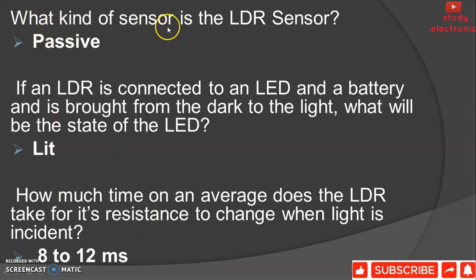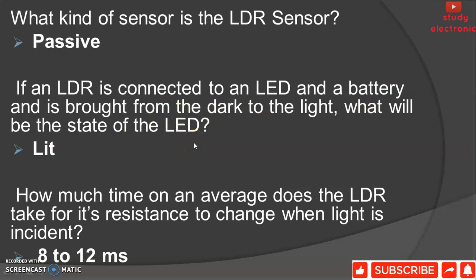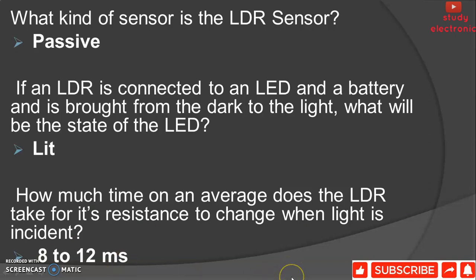What kind of sensor is the LDR sensor? It is a passive sensor. If an LDR is connected to an LED and a battery and is brought from dark to light, the LED will light up. The average time an LDR takes for its resistance to change when light is removed is 8 to 12 milliseconds.